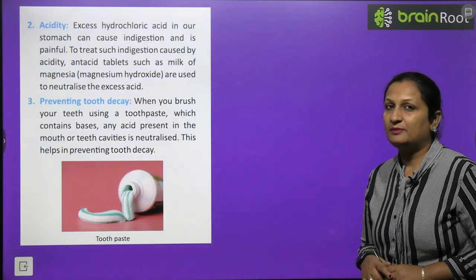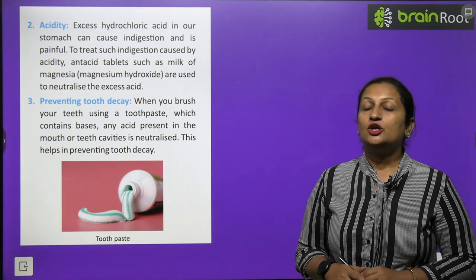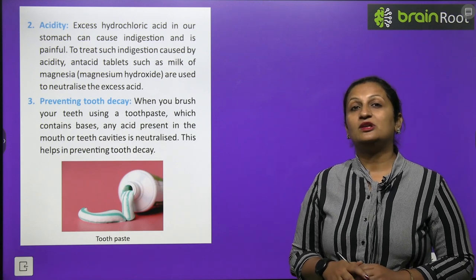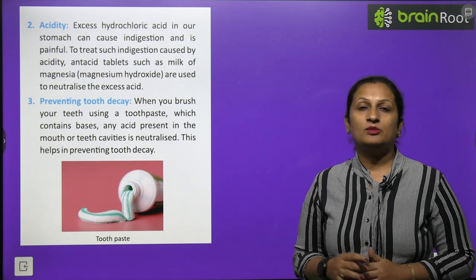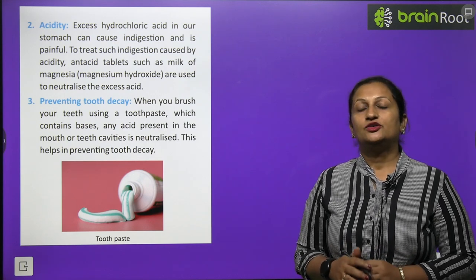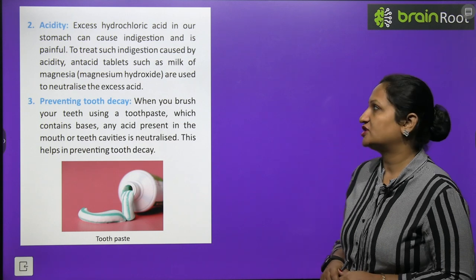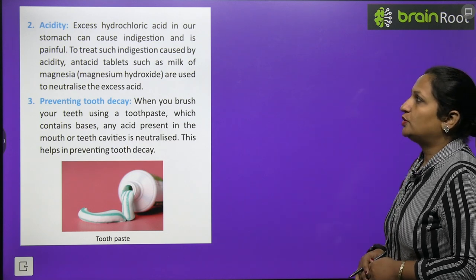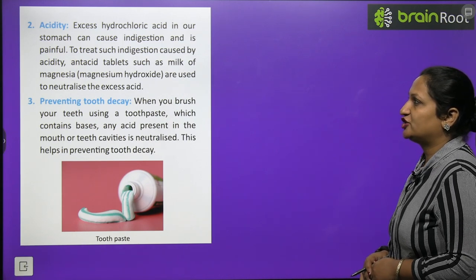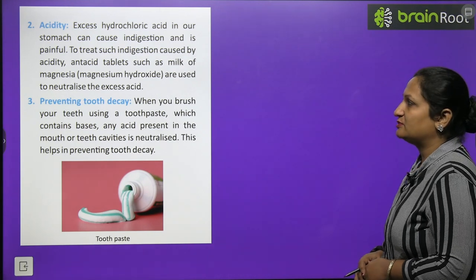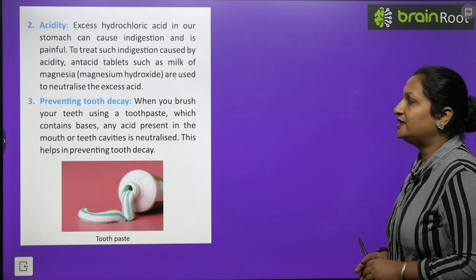Acidity: As we just discussed, if excess hydrochloric acid is formed in our body, we get acidity. In this case, we should take milk of magnesia, that is magnesium hydroxide. We get it in tablet form or solution form. When we take this, it neutralizes this acid, and we get relief from acidity. Excess hydrochloric acid in the stomach can cause indigestion and is painful. To treat such indigestion caused by acidity, antacid tablets such as milk of magnesia are used to neutralize the excess acid.